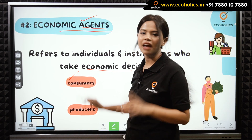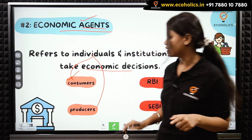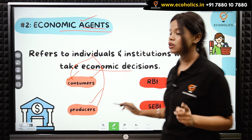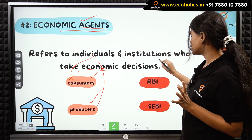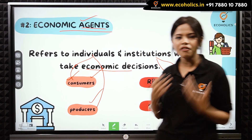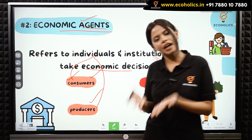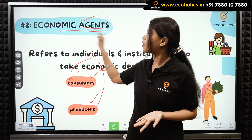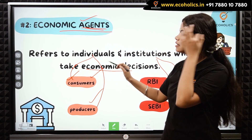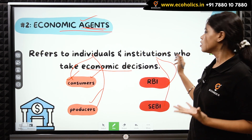Economic agents include consumers and producers at an individual level. At an institutional level, we have the RBI, CB, and the government. All of these people who basically perform some kind of economic activity become your economic agents. The term refers to individuals and institutions who take economic decisions.